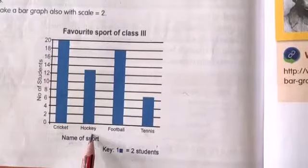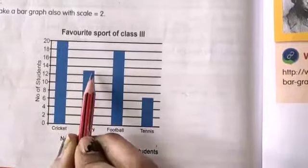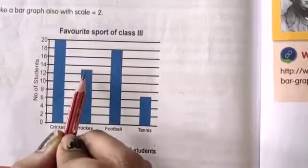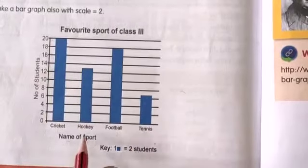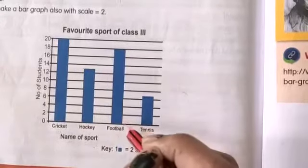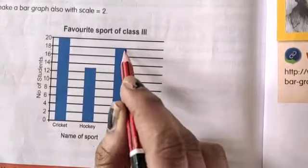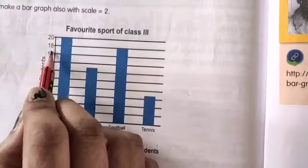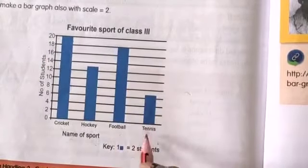And the next one, hockey. Hockey, where is it? This bar, it is between 12 and 14. So what does it mean? It is 13 students like hockey in a class. Now football, this is the bar of football so we will see. So it is 18, 18 students like football.